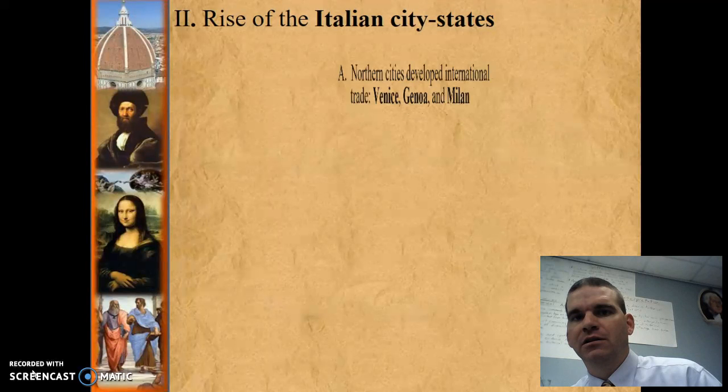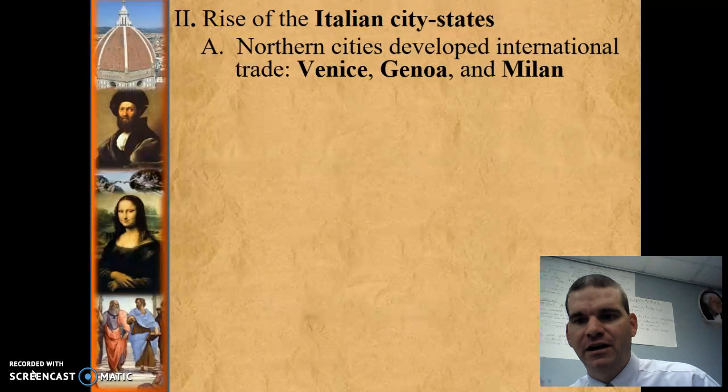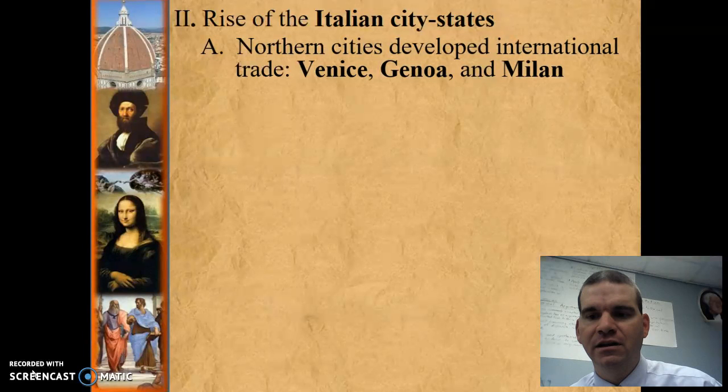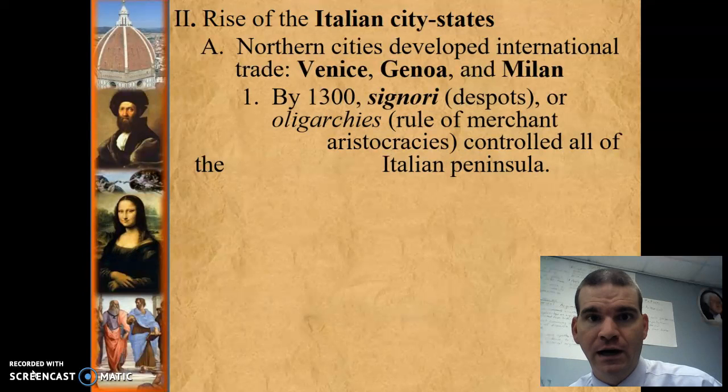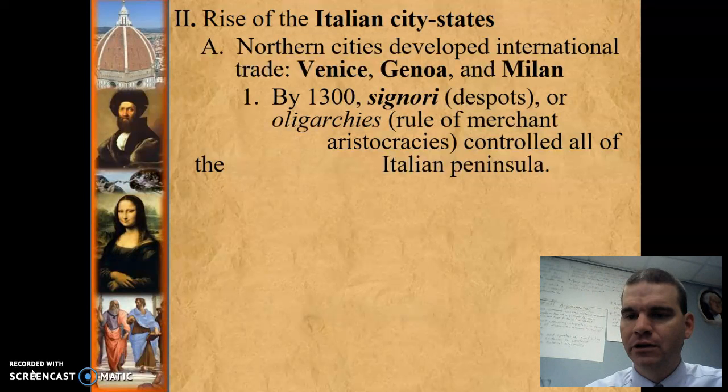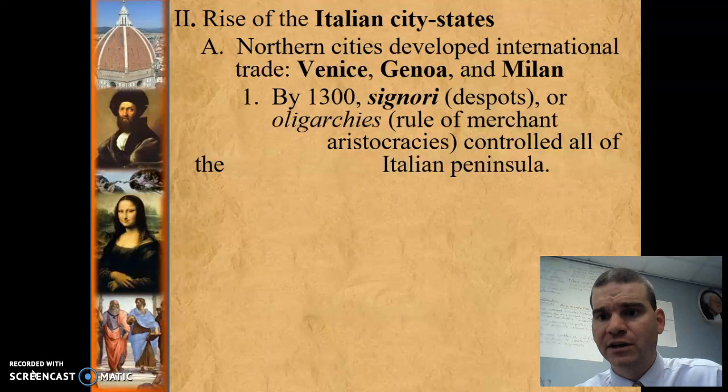It's very important that you understand that Italy is not a country — they are made up of city-states. Had they been a unified country, history would have been much different. You can see the northern cities: Venice, Genoa, and Milan. They're going to gain most of their riches through trade. Look at a map and you'll see the advantages they have — location, location, location will tell you everything you need to know.